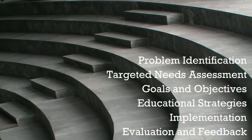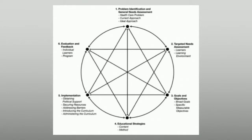These are our six steps: problem identification, targeted needs assessment, goals and objectives, educational strategies, implementation, and evaluation and feedback. We present them in a linear fashion, but all of these steps really interconnect. As you progress through the steps, you'll notice that as you get to step three — goals and objectives — you might want to refocus what you're doing and go back to your original problem identification. Likewise, thinking about problem identification will help guide your objectives. These are steps that are constantly revisited and impact each other.